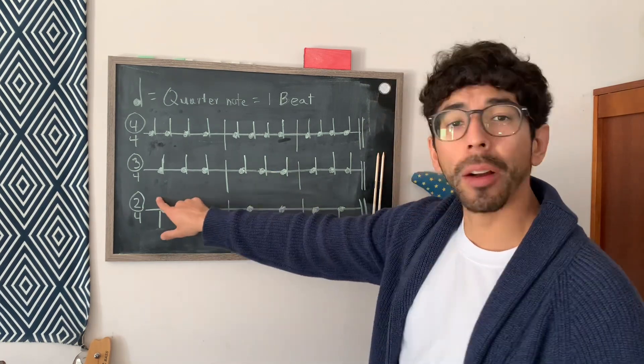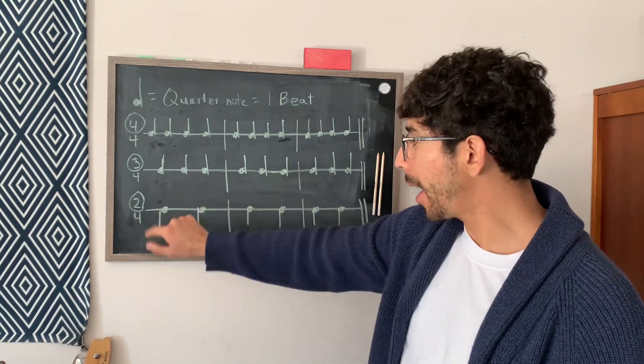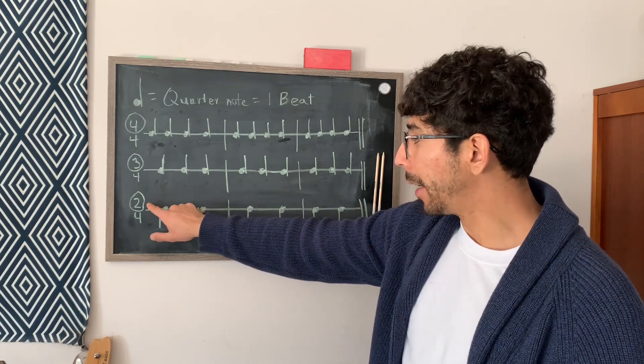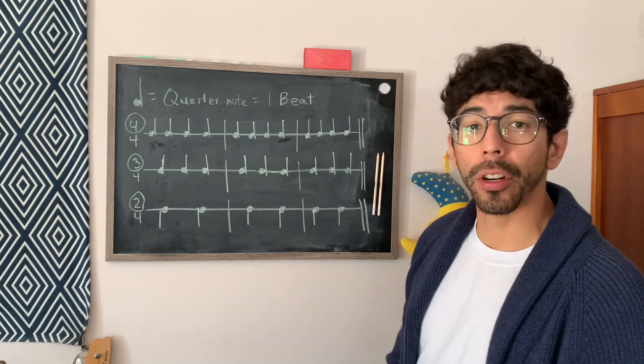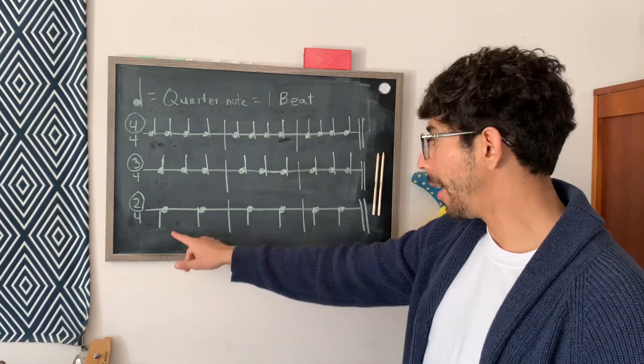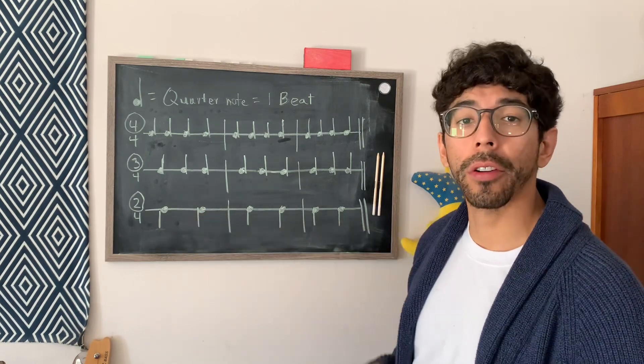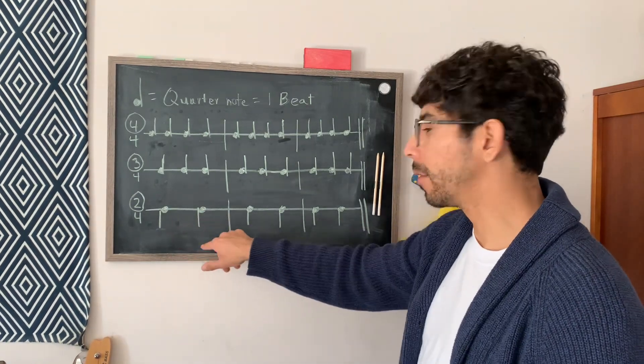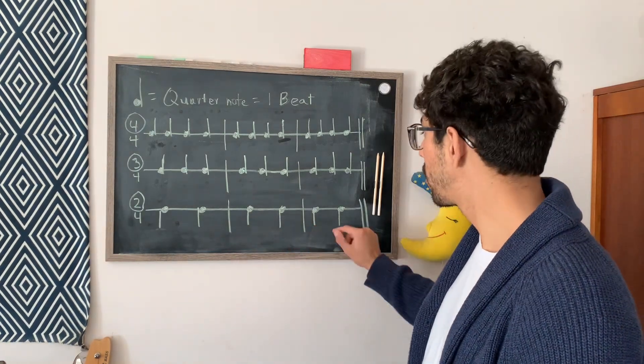And then we come to the last time signature for today, and this is 2-4. So what this one means is that there's two beats per measure, and if one beat equals a quarter note, then there's going to be two quarter notes per measure. And we would count this in twos. So we'd go 1, 2, 1, 2, 1, 2.